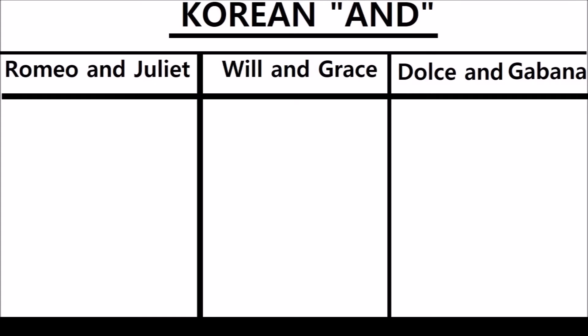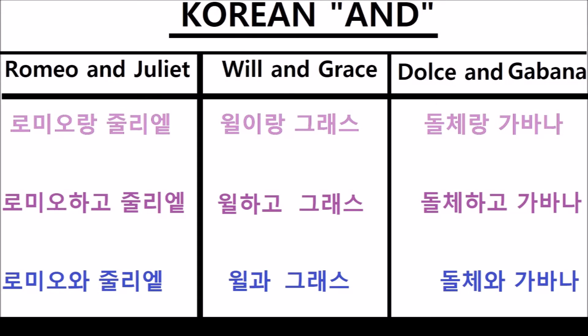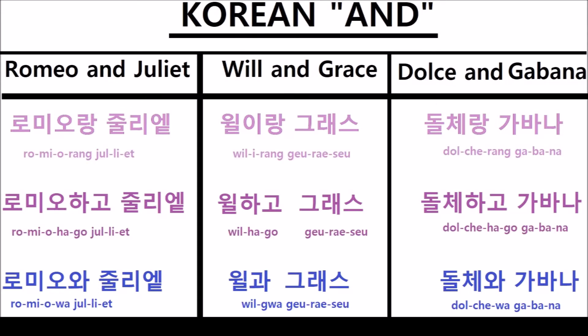Try a couple of examples yourself. How do you say 'Romeo and Juliet'? 'Will and Grace'? 'Dolce and Gabbana'? Here are the answers — don't read them until you've tried it yourself.